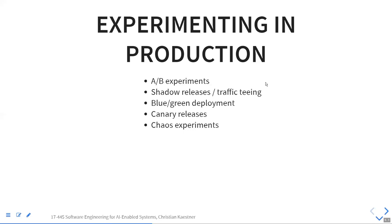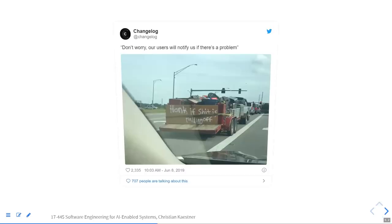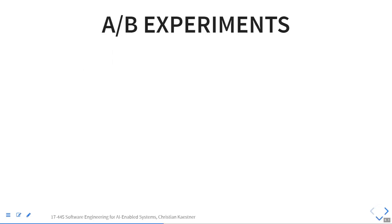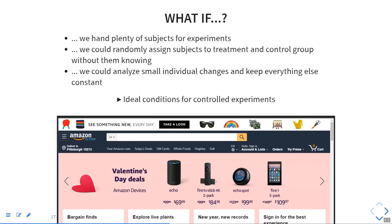So the thing we've talked about so far is pushing something into production and monitoring how you're doing. There are a couple more things where you can run explicit experiments in production — that's very common. Most of you have seen A/B tests in some form. This is experimenting in production: running what-if scenarios.